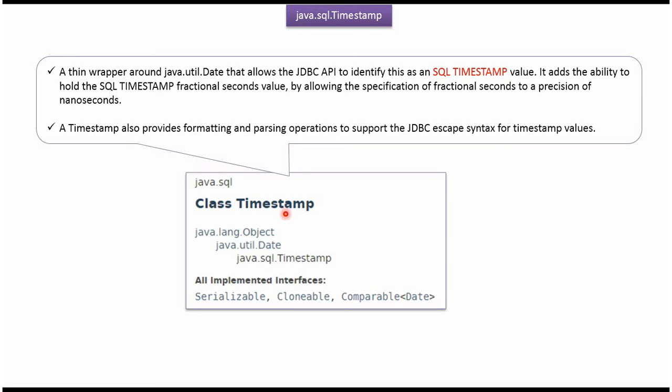The instance of Timestamp class we can save in the database. A Timestamp value contains date, hours, minutes, seconds, and nanoseconds.